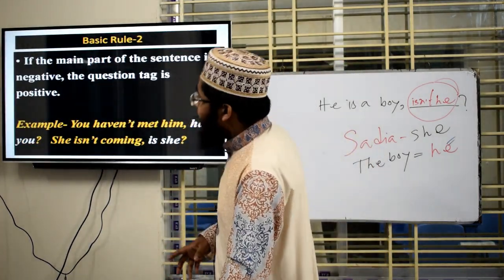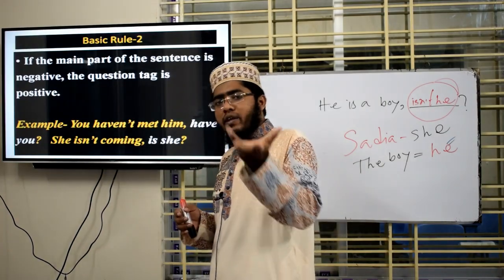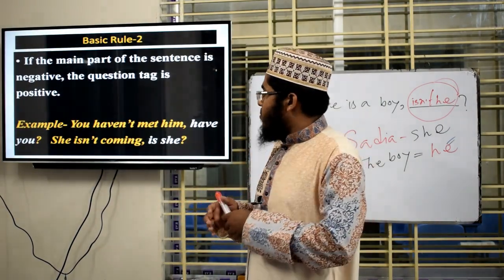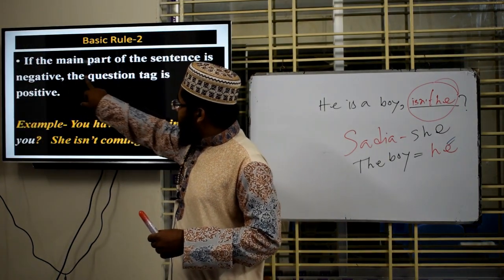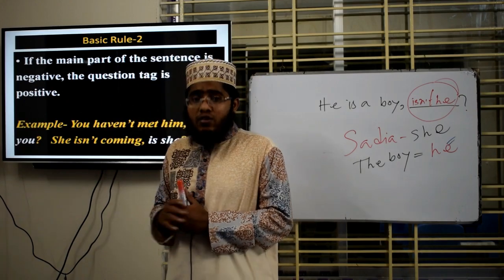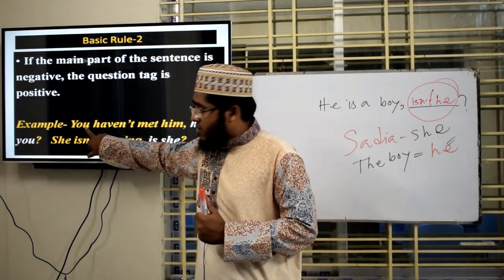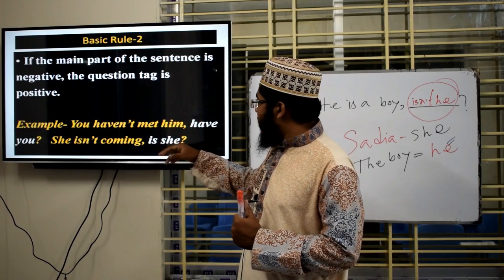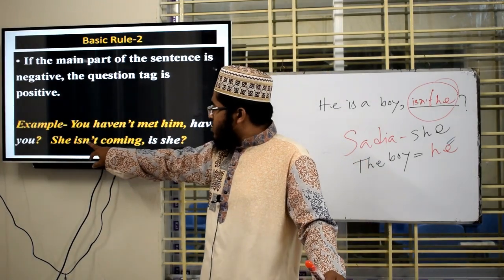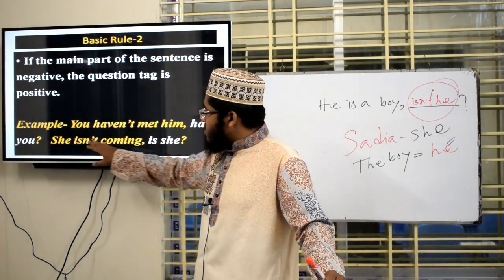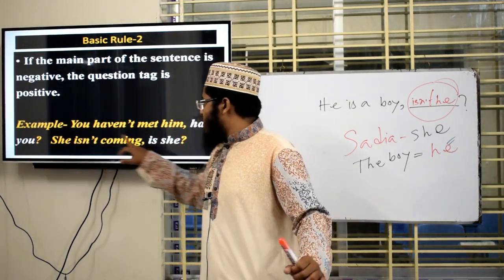The second rule: if the main part of the sentence is negative, the question tag must be positive interrogative. For example, 'You haven't met him.' This sentence is negative, so we make it positive: 'have you?' Another example: 'She isn't coming.' The sentence is negative, so taking 'is' as auxiliary and 'she' as subject, the tag is 'is she?'